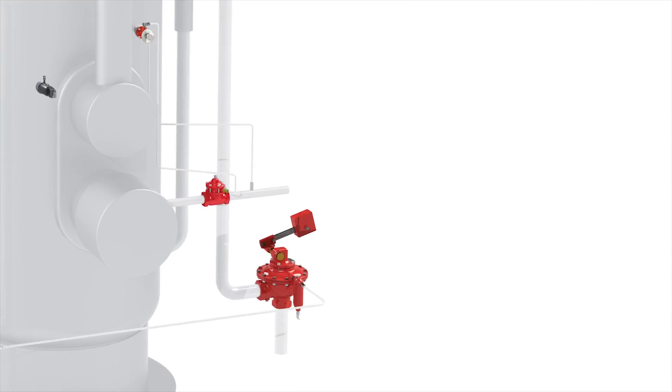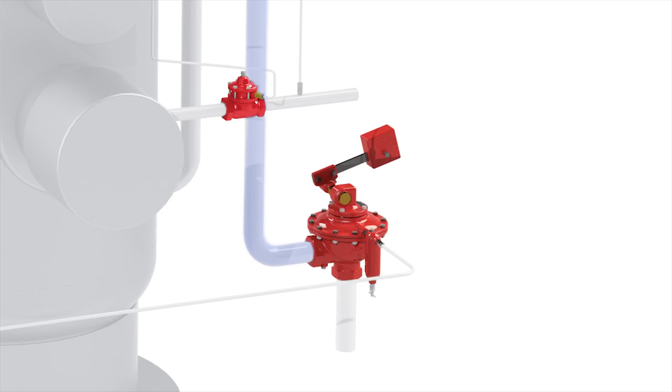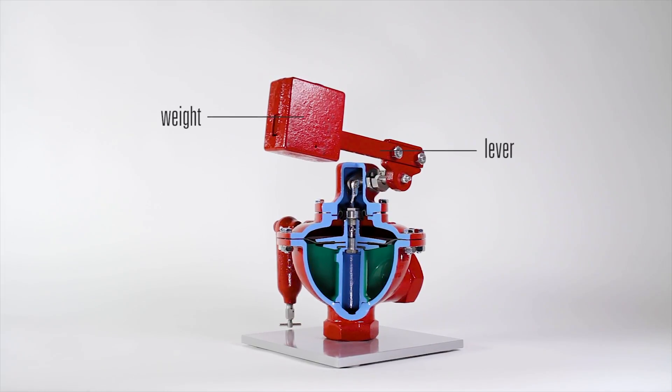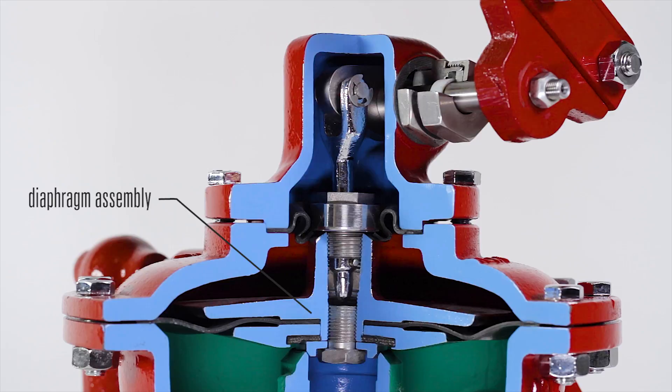The valve actuates based on the hydrostatic pressure generated from a column of liquid in the discharge piping from a vessel. The force to hold the seat closed is applied by a weight and lever which pushes down on the diaphragm assembly.